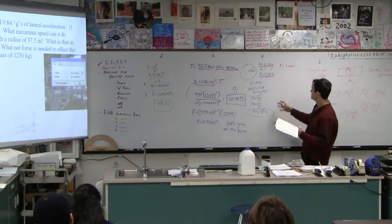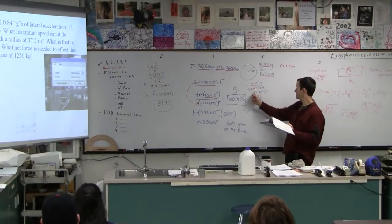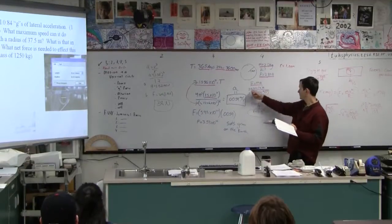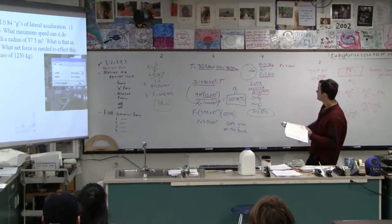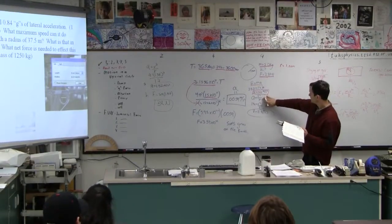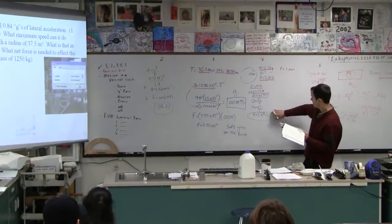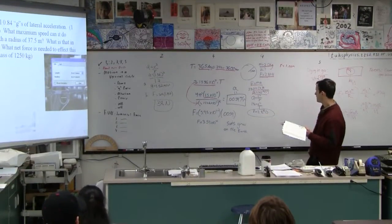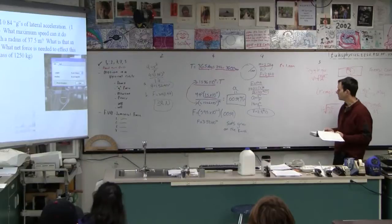The first thing they did was find the acceleration. So F equals ma, find the acceleration. The second thing is a is v squared over r, so find the velocity that way.